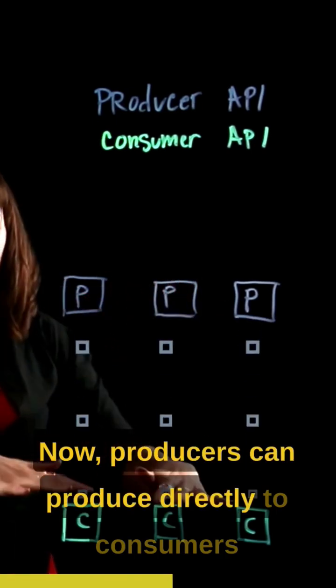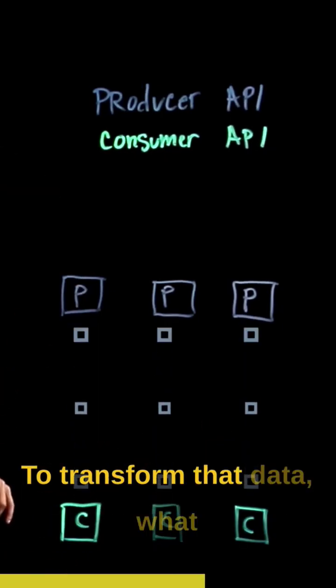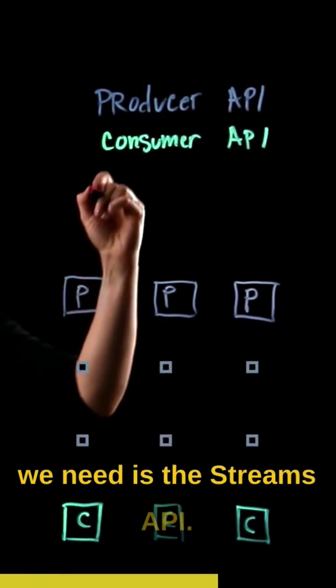Producers can produce directly to consumers, and that works for a simple Kafka application where the data doesn't change. To transform that data, what we need is the streams API.